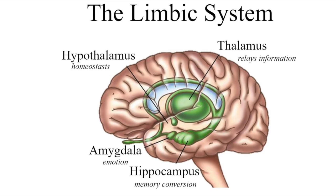Lorazepam specifically acts on the limbic system, and within the limbic system there is a part called the amygdala. The amygdala is responsible for the emotions part. Lorazepam is used to treat anxiety and insomnia, and it can also produce a muscle relaxation effect. Those are the clinical uses or benefits we can get from this drug.